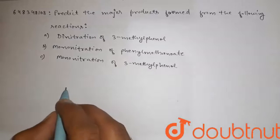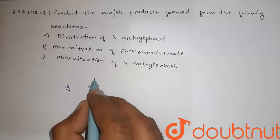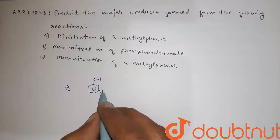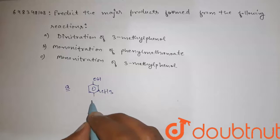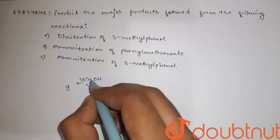2-methylphenol B. So guys, the major product of A is this OH-CH3-NO2 and here is also NO2.